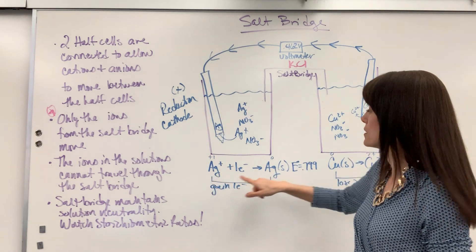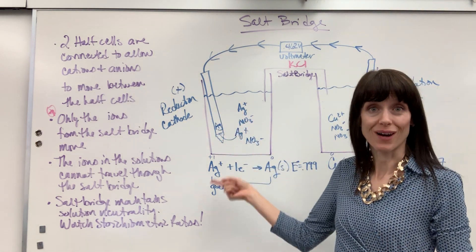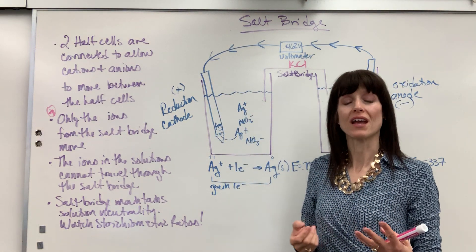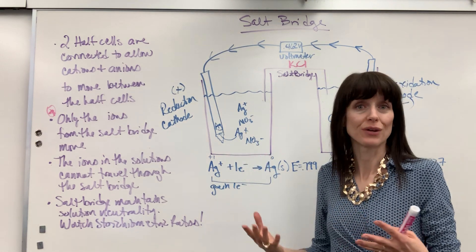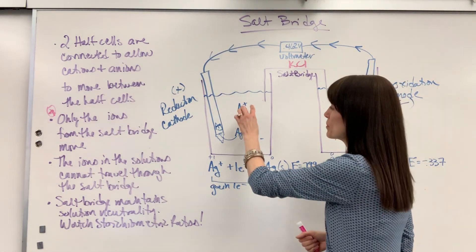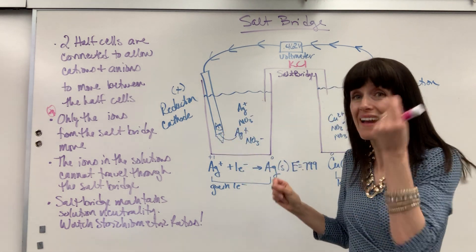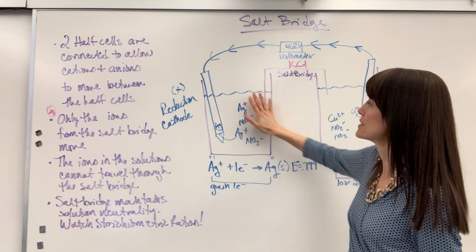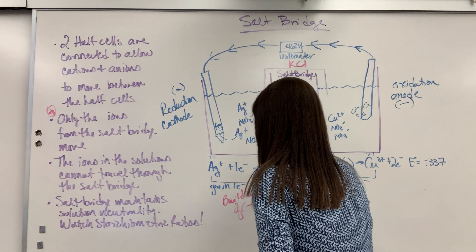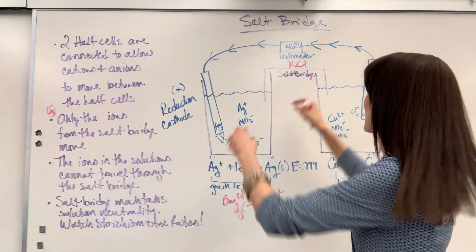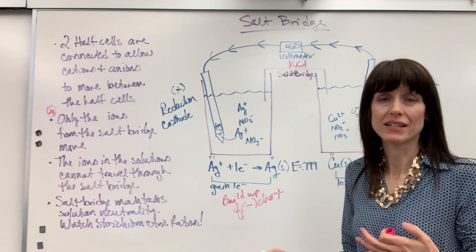It goes from silver ion to silver solid. This solution loses two of those silver ions — they become silver solid, which is the electrode growing through plating. The silver goes from ion in solution, gains an electron, and becomes solid, sticking to the electrode. So I'm losing all this positive charge. This solution is silver nitrate, so if two silver ions become silver solid, I have two extra nitrates — this gets a buildup of negative charge.